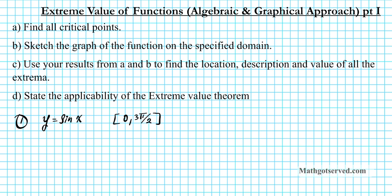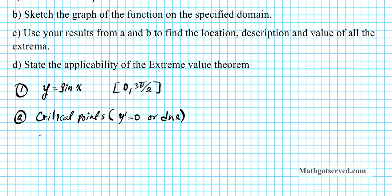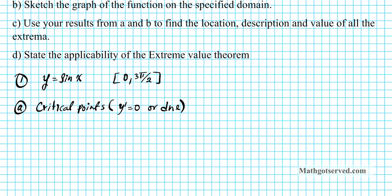Let's start with part A, where we find the critical points. Critical points are basically points in the domain where the derivative is either 0 or does not exist. So the first thing we are going to do is rewrite the function: y equals sine x. We are going to look for the first derivative, y prime. The derivative of sine is cosine x, so y prime is equal to cosine x.